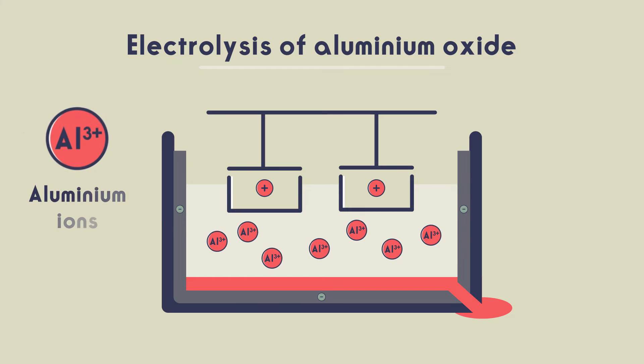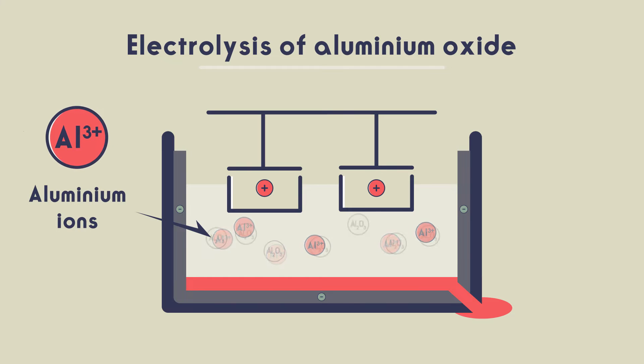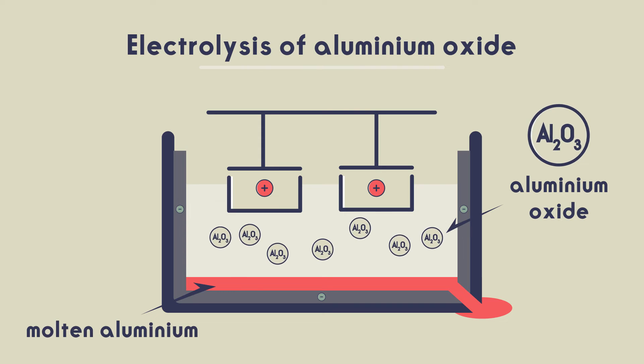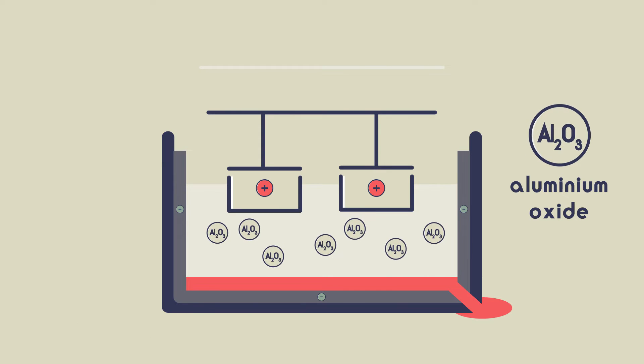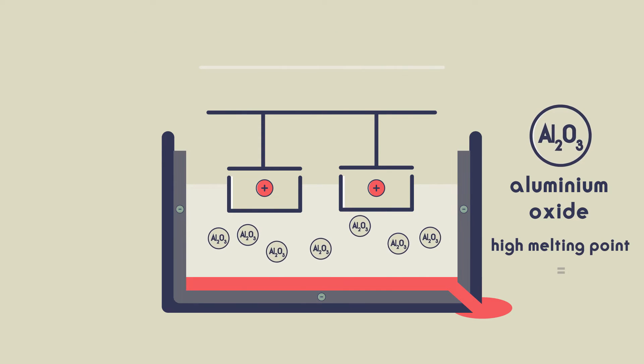In electrolysis, ions need to pass through the electrolyte and so the aluminium oxide must be made molten. Aluminium oxide has a very high melting point, over 2000 degrees Celsius. So instead of trying to melt it, the aluminium oxide is dissolved in molten cryolite.